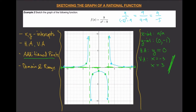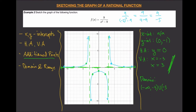Now let's find the domain and range. Looking at the x-axis, the graph stretches to negative infinity but stops at the boundary x equals negative three. So the domain starts at negative infinity up to negative three, open, union negative three to positive three, open, union positive three to infinity, open.